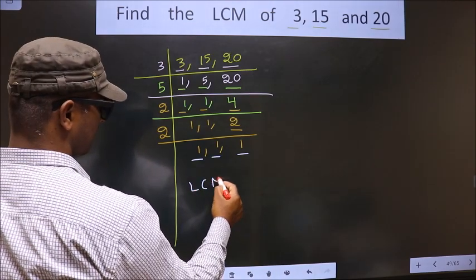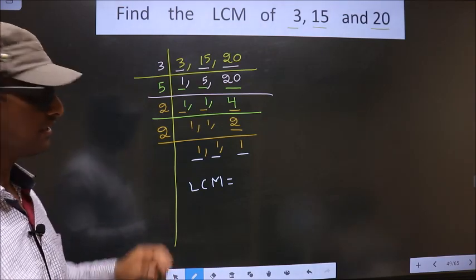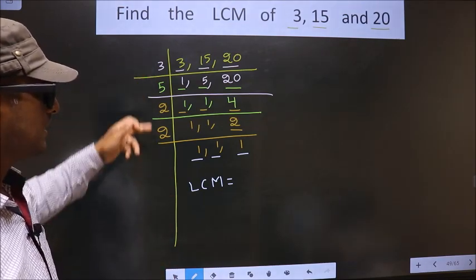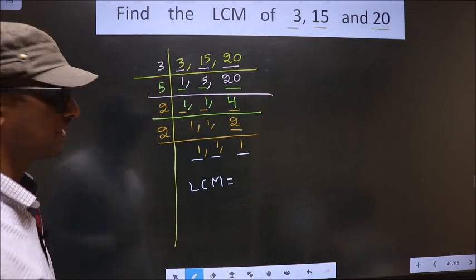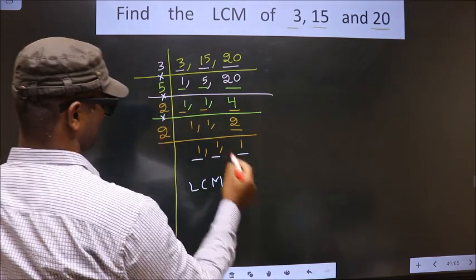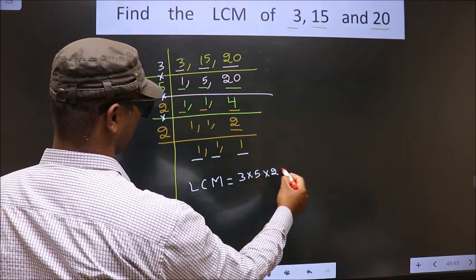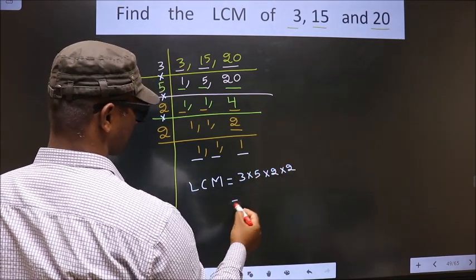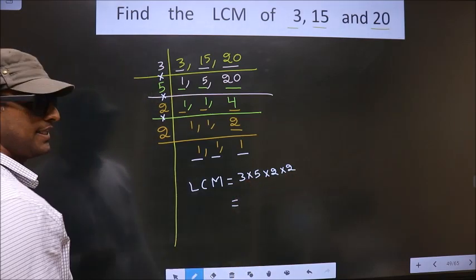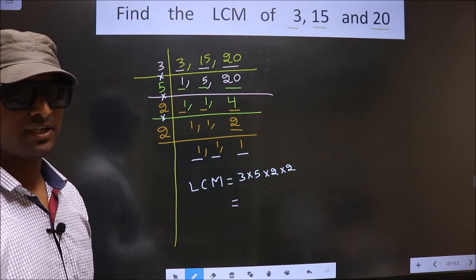LCM is the product of these numbers. That is 3 into 5 into 2 into 2. You multiply all these numbers. Whatever number you get, that is your LCM.